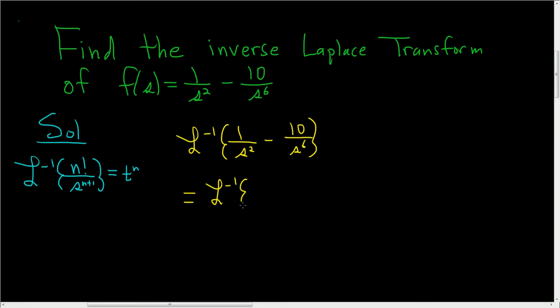It's the inverse Laplace of 1 over s squared minus—we can pull the 10 out because it's a number, it's linear. Everything here is linear, so we have 1 over s to the 6th.